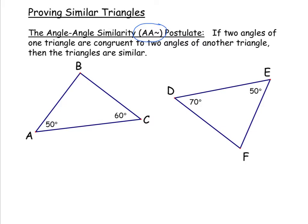Now in our diagram, it might appear at first glance that there aren't two angles in one triangle congruent to two angles in the other, but we shouldn't just go off of what's labeled. There's additional information we can find. We can find the measure of the third angle in each triangle. For the first triangle, we add 50 and 60 to get 110, subtract from 180, and find that angle B measures 70 degrees.